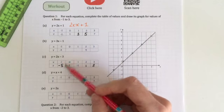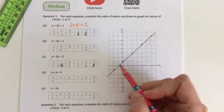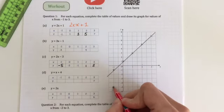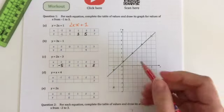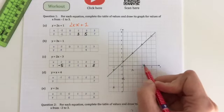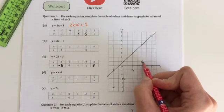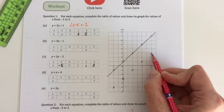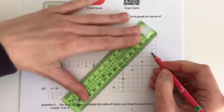So if I was to draw this one again, we're starting on negative 1, but this time it's at negative 5. Then it's 0, negative 3, 1, negative 1, 2, 1, 3, 3. So you can see, they're all nicely in line again.